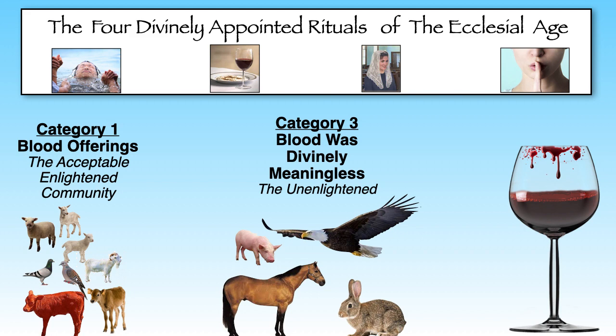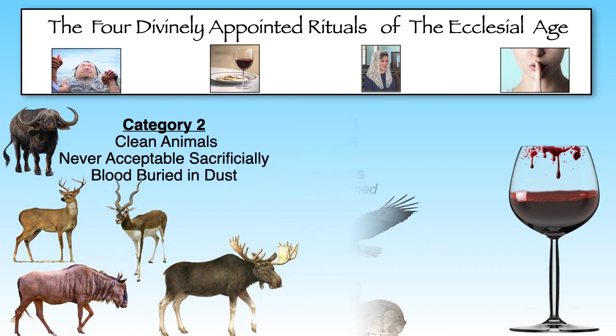Now let's identify that second category of clean animals — the ones who were divinely clean, but their blood was forbidden at the altar. Their blood had to be buried in the dust of the earth. And blood is God's symbol for life, and the blood is the focus of the memorial wine.